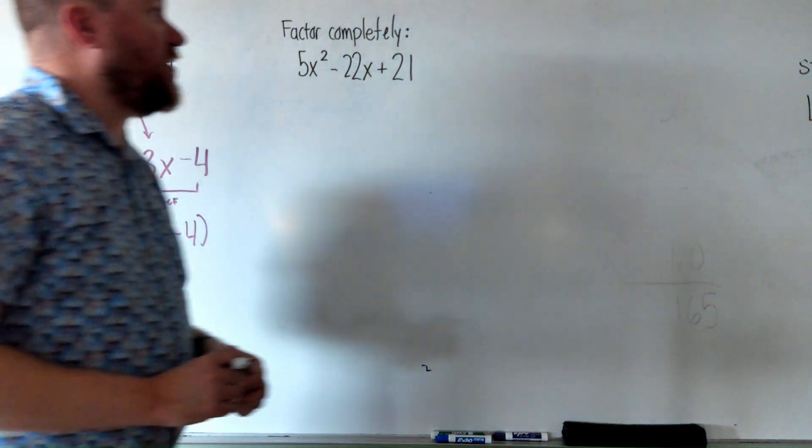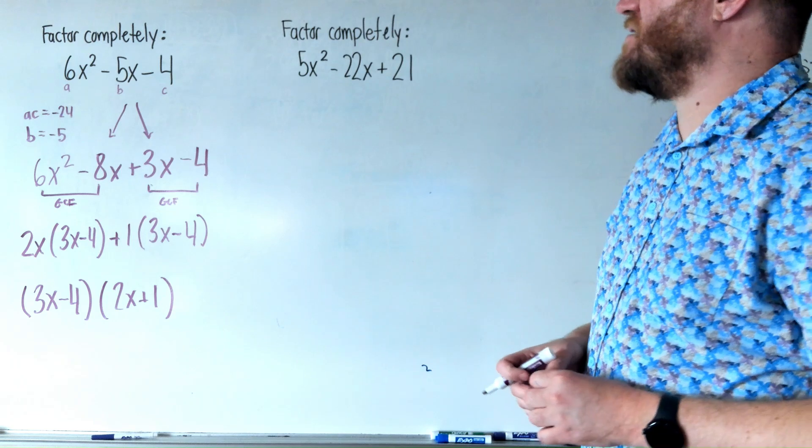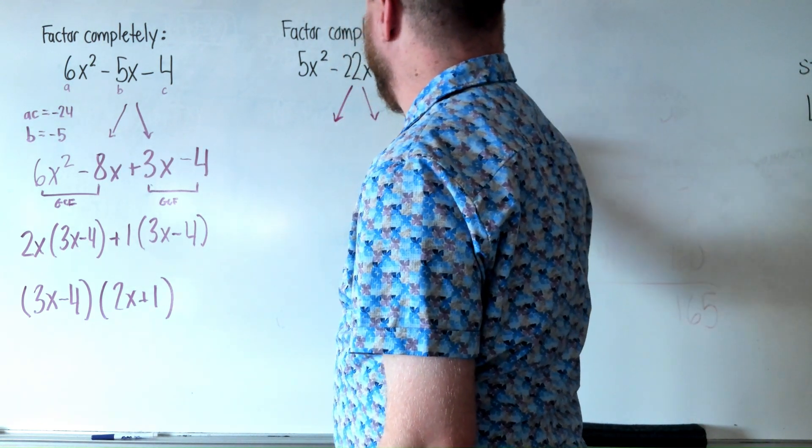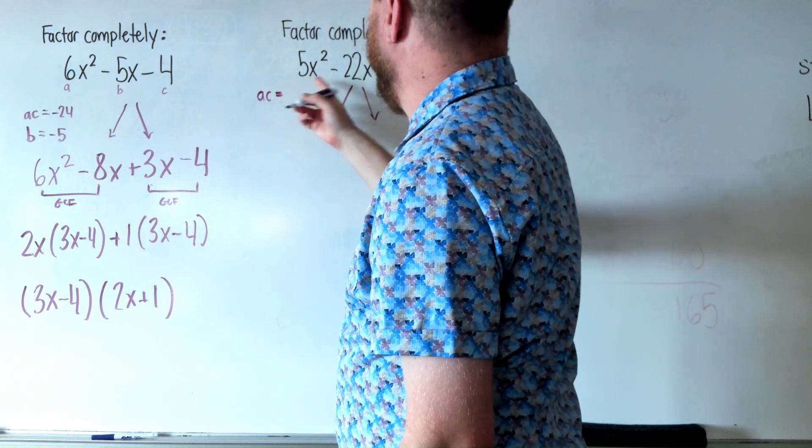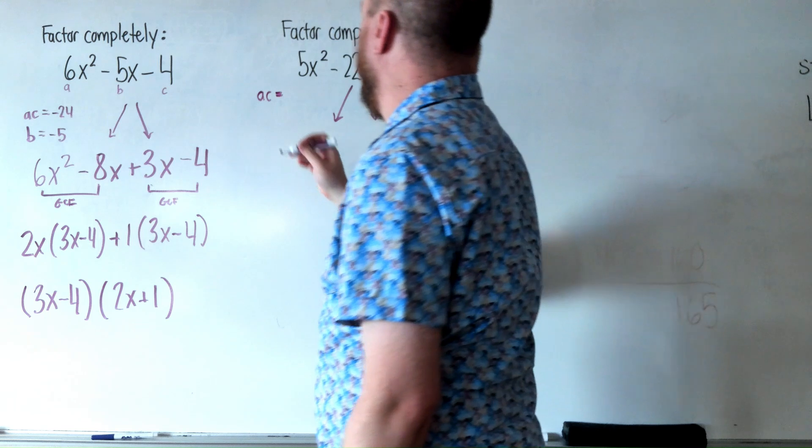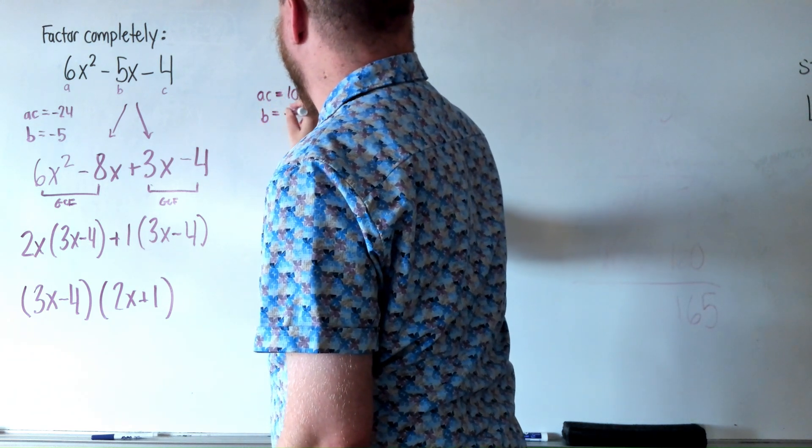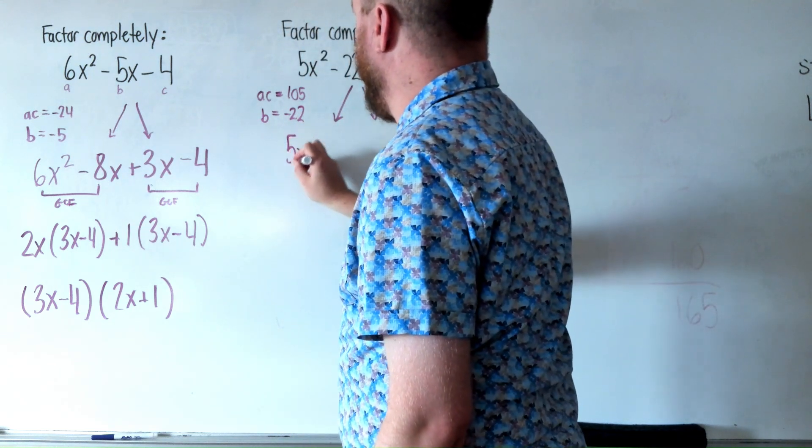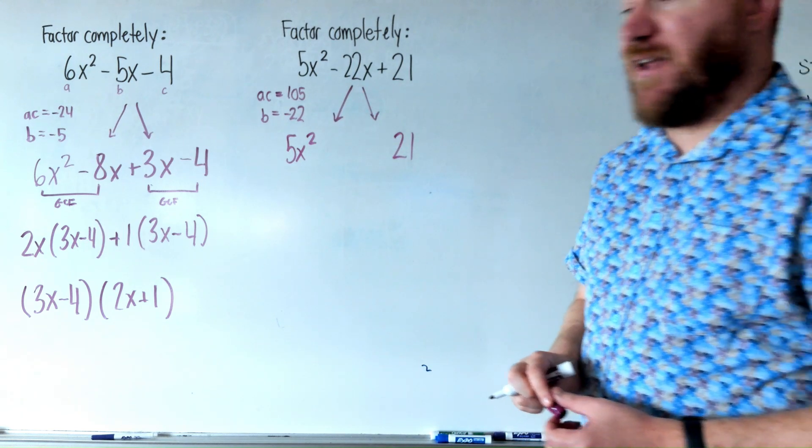Now, for the second example here, let's factor this one completely. This is going to be the same exact process. We're going to break this into two terms. And over here in the margin, I'm going to say AC is 5 times 21, which is 105. And B is negative 22. So we need 5x² and 21. Remember, the first and last term never changed.